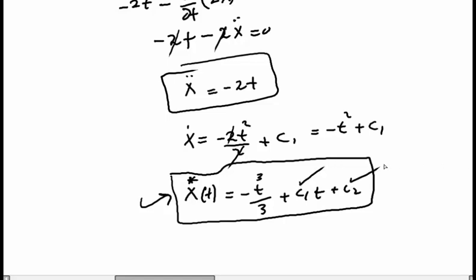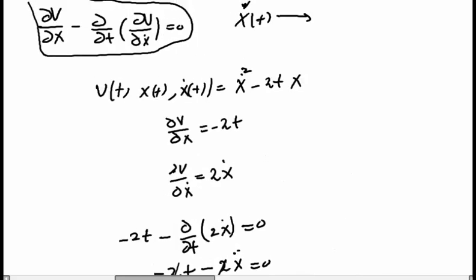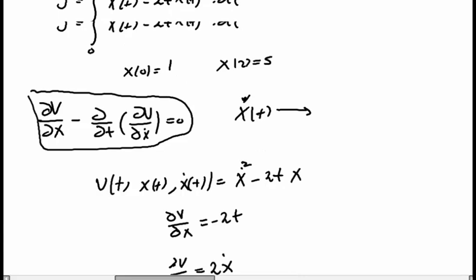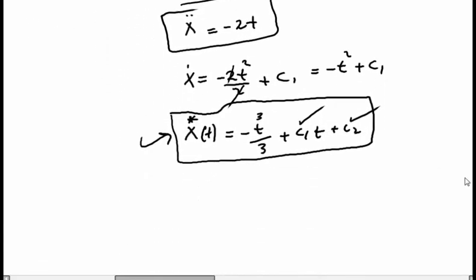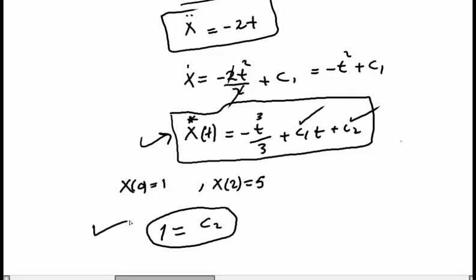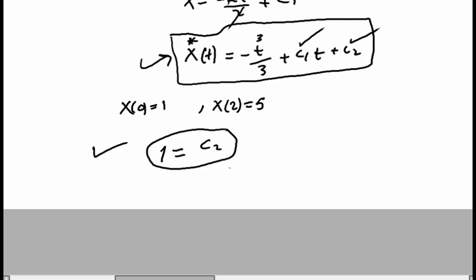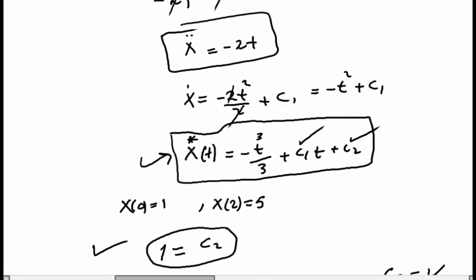We need to find the two coefficients using the boundary conditions: x(0) = 1 and x(2) = 5. Substituting t = 0: 1 = 0 + 0 + c₂, so c₂ = 1. Substituting t = 2: 5 = −8/3 + 2c₁ + 1. Solving this gives us c₁, which we substitute back to get the complete x*(t).